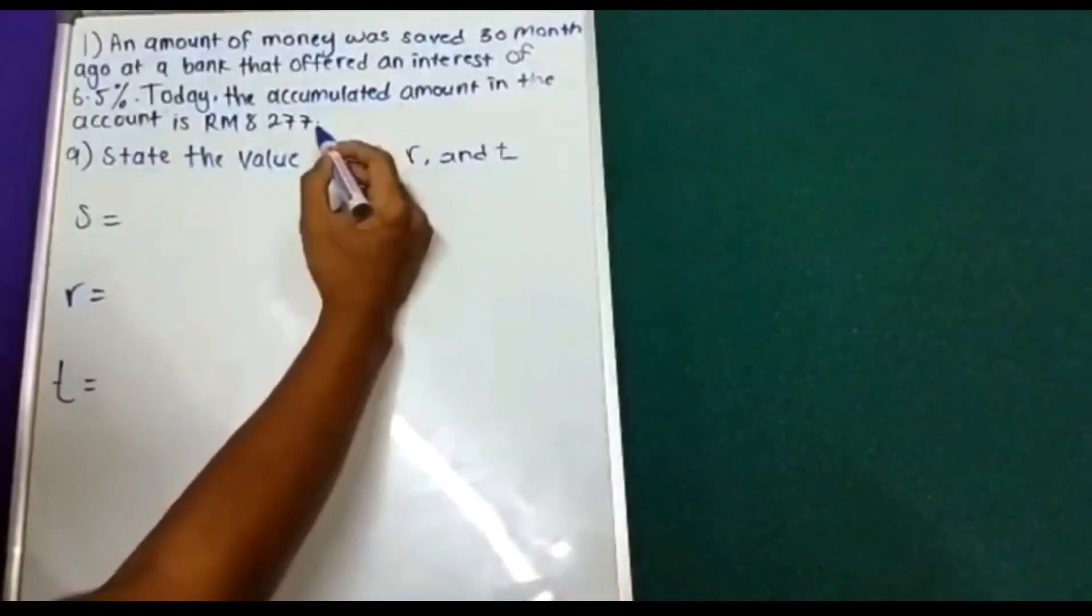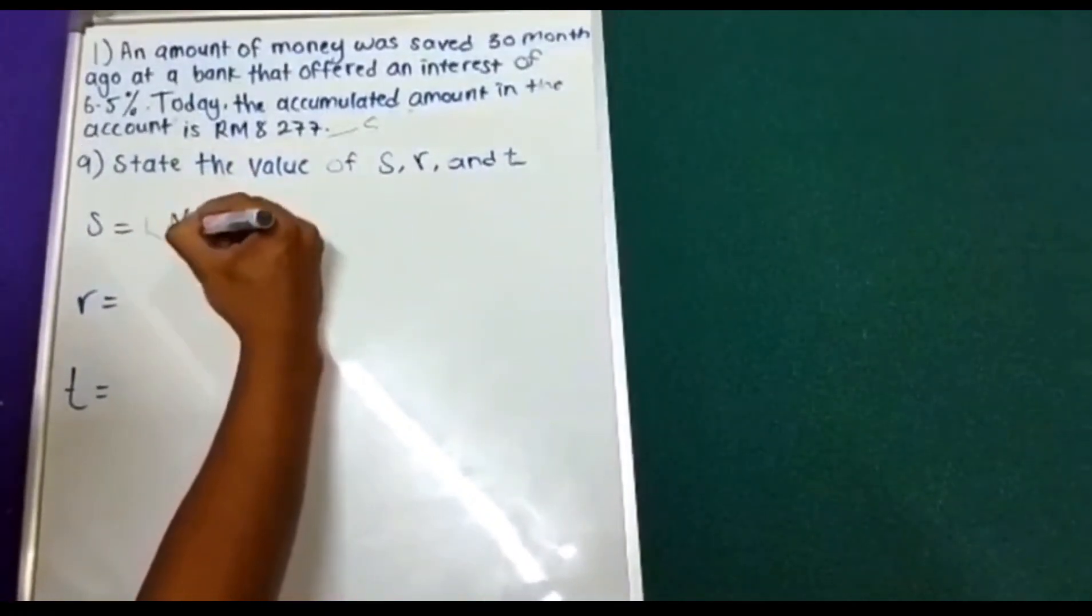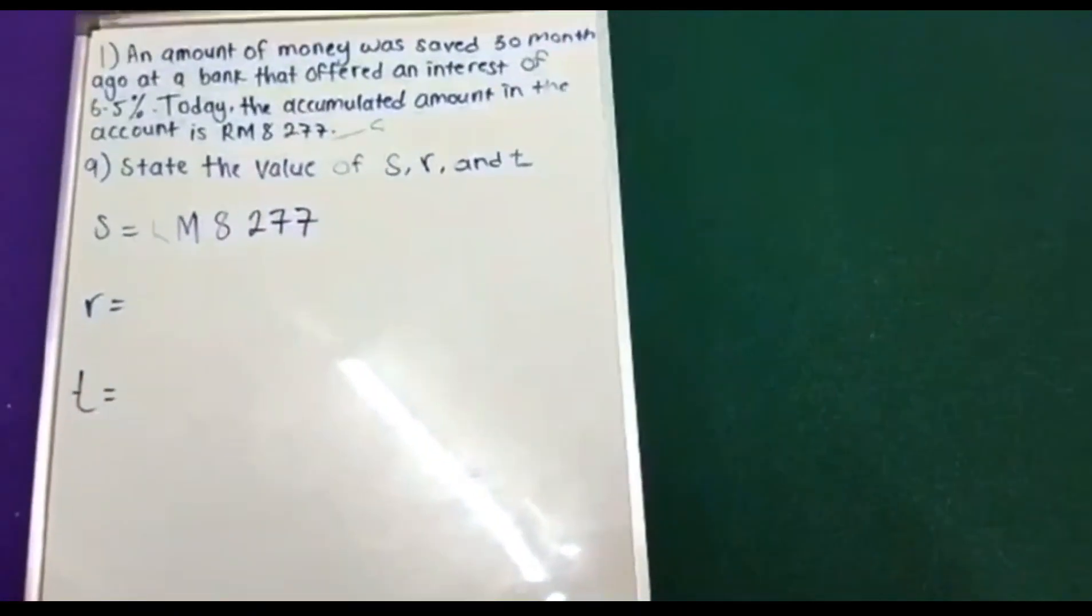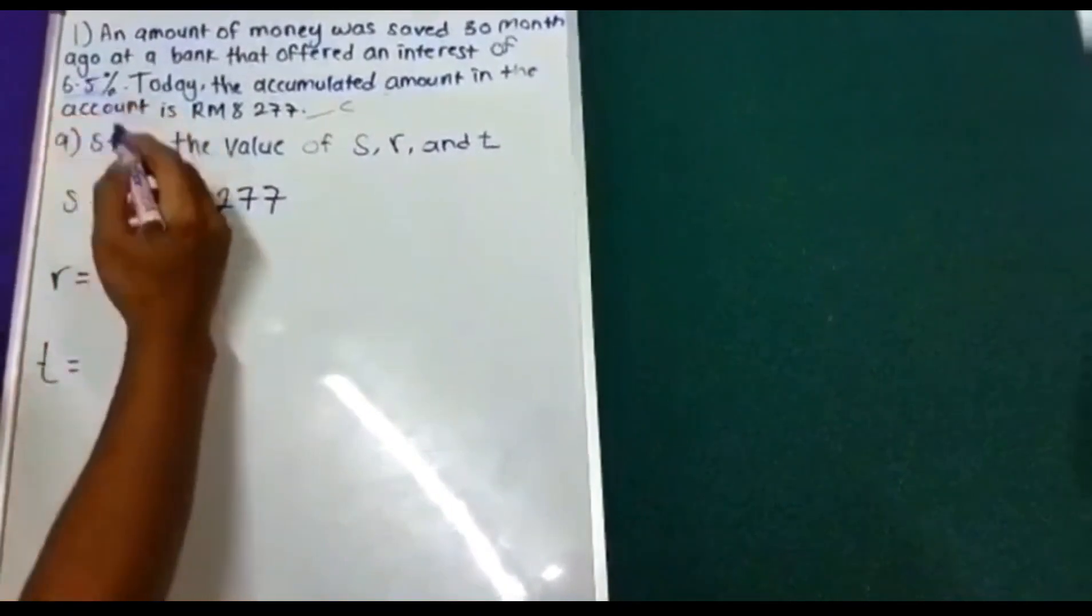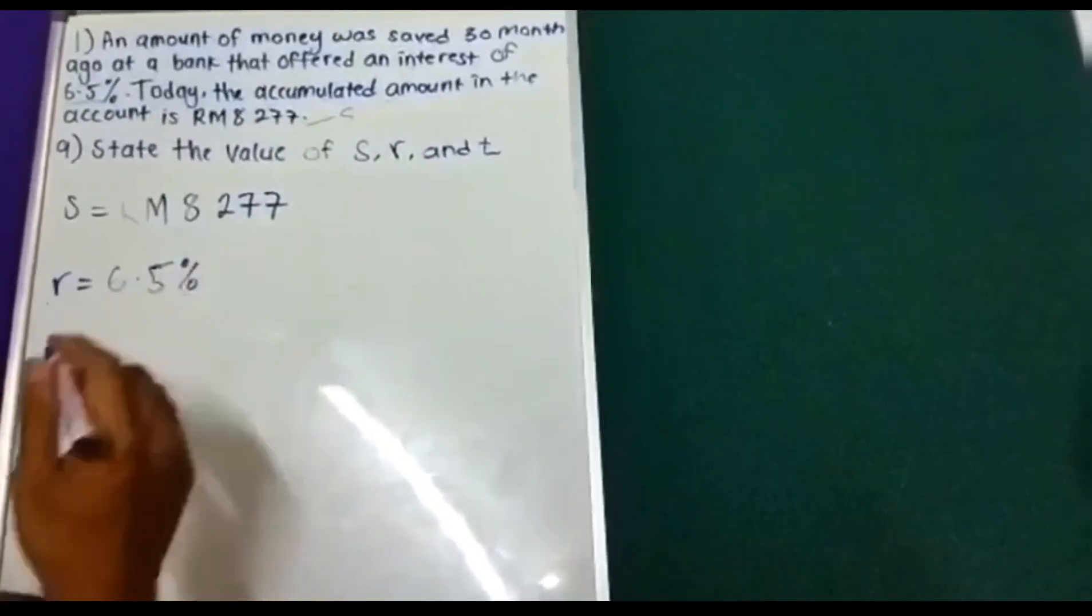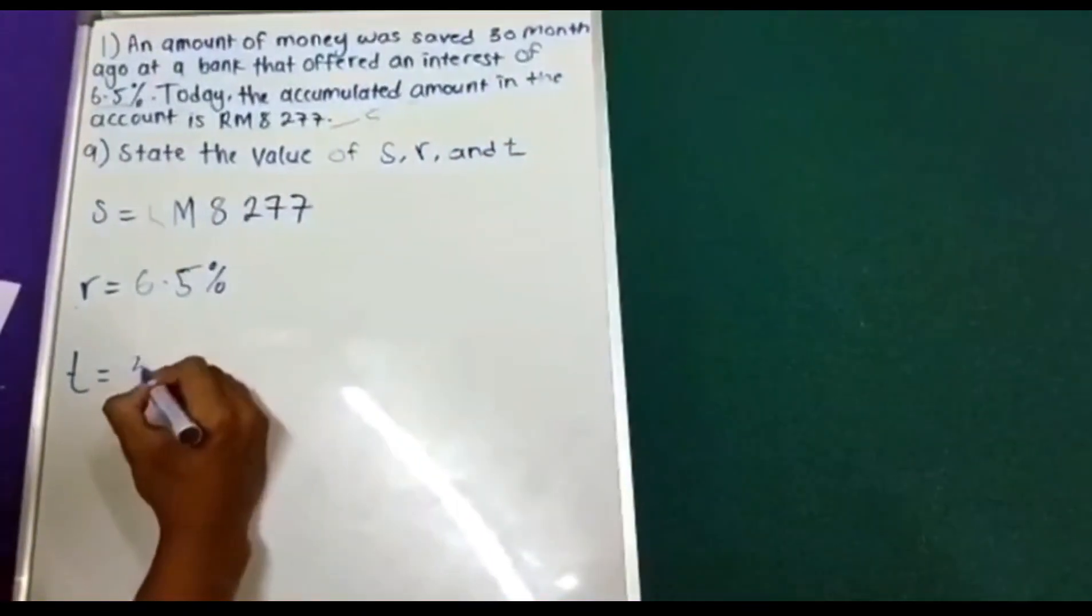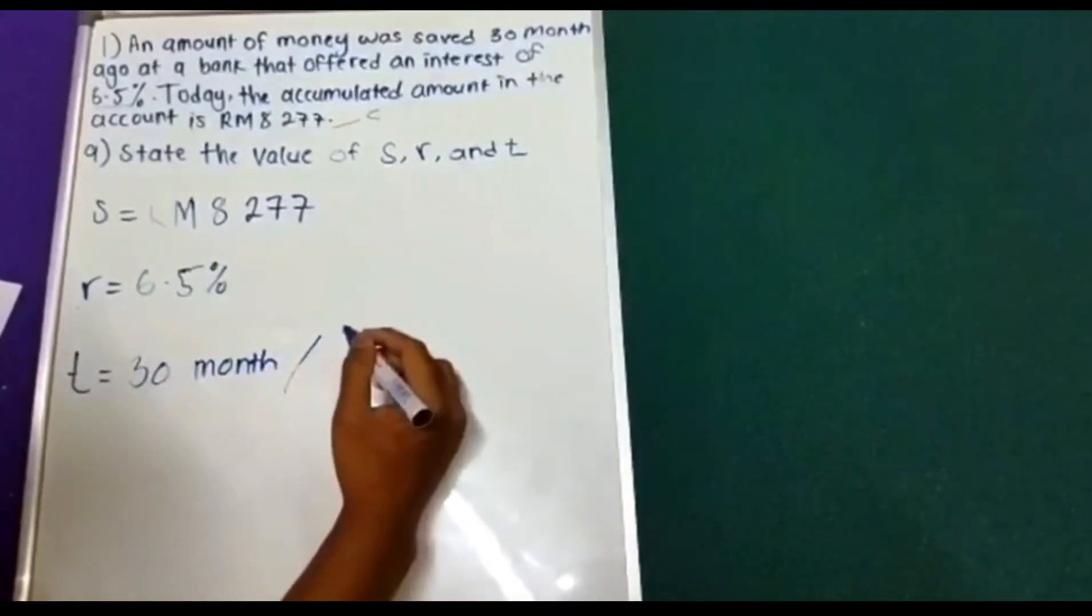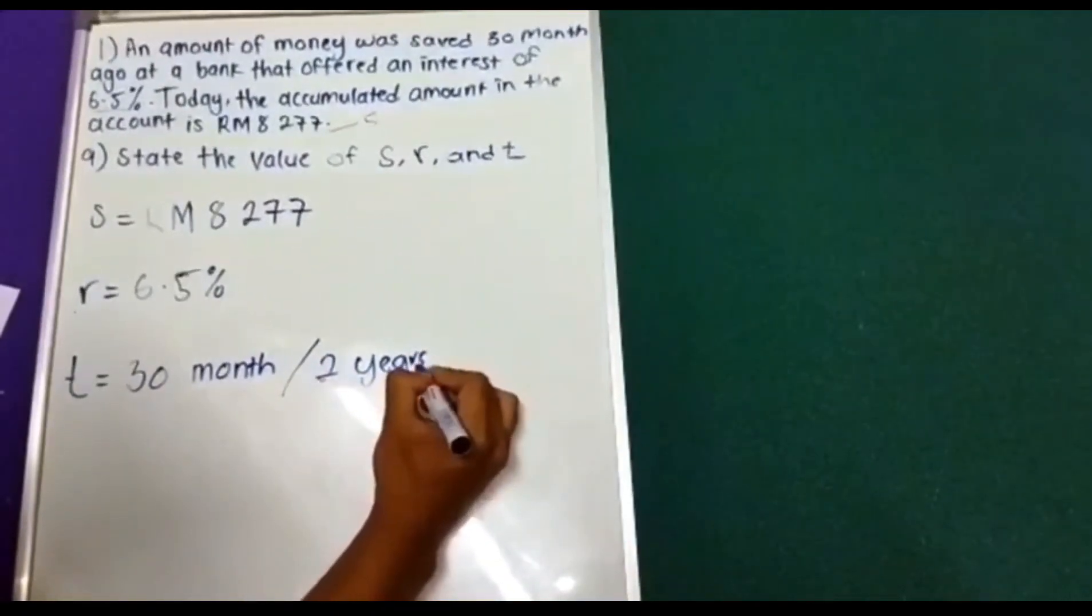So, this value is S. For the value of R, we can get from this, 6.5%. Term of T is this, 30 months, or 2 years 6 months.